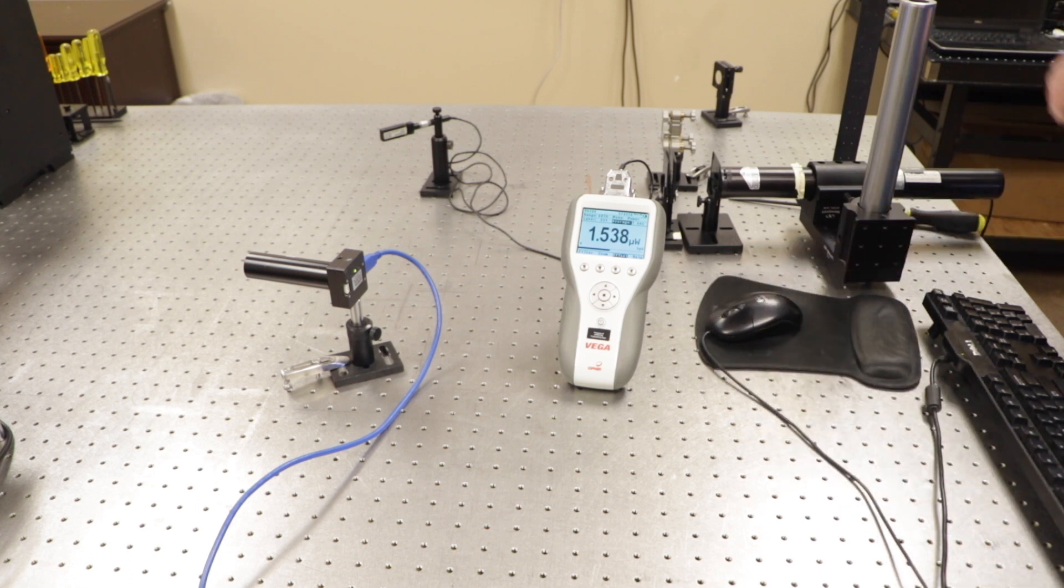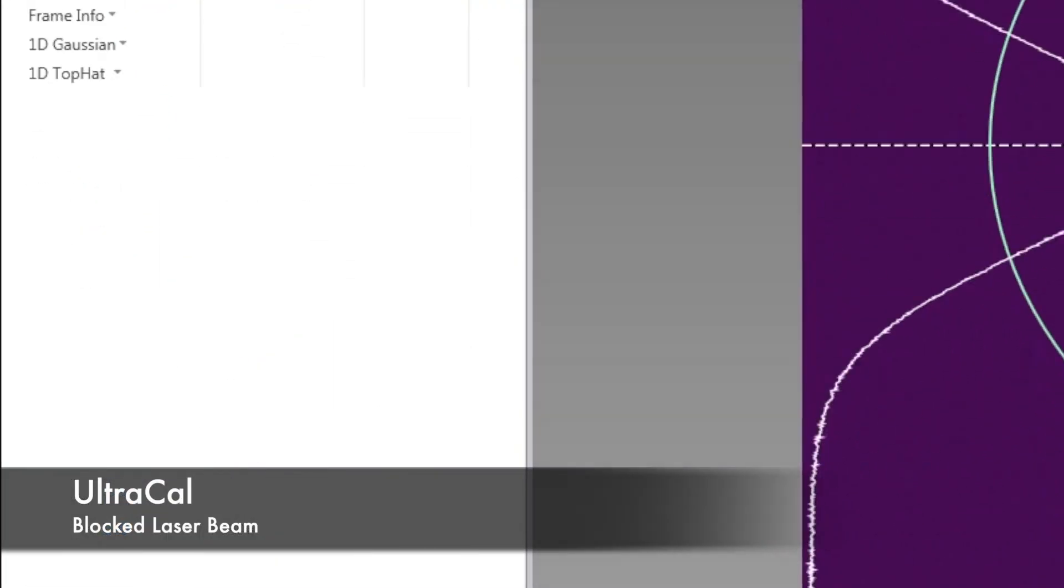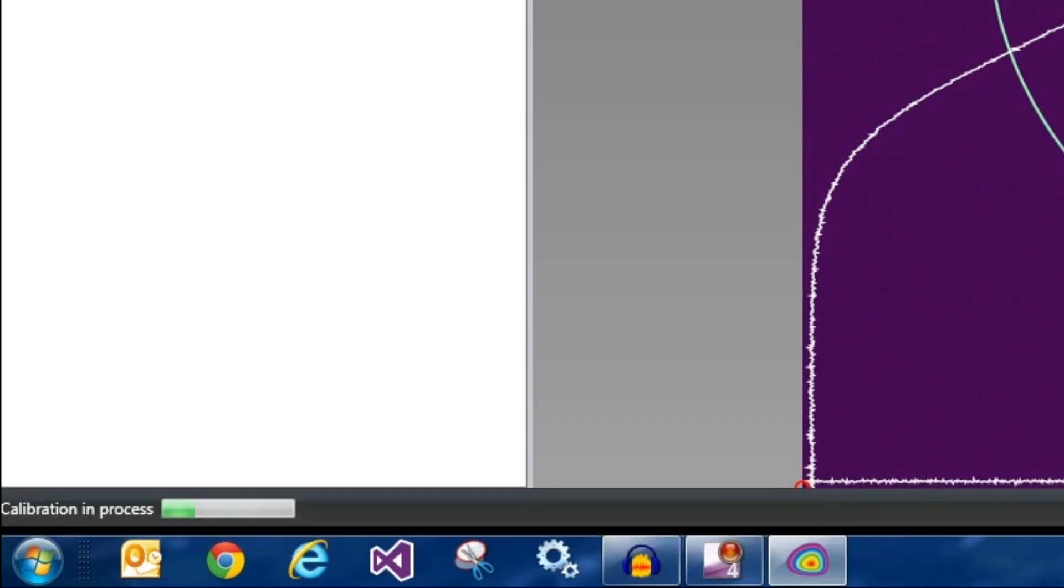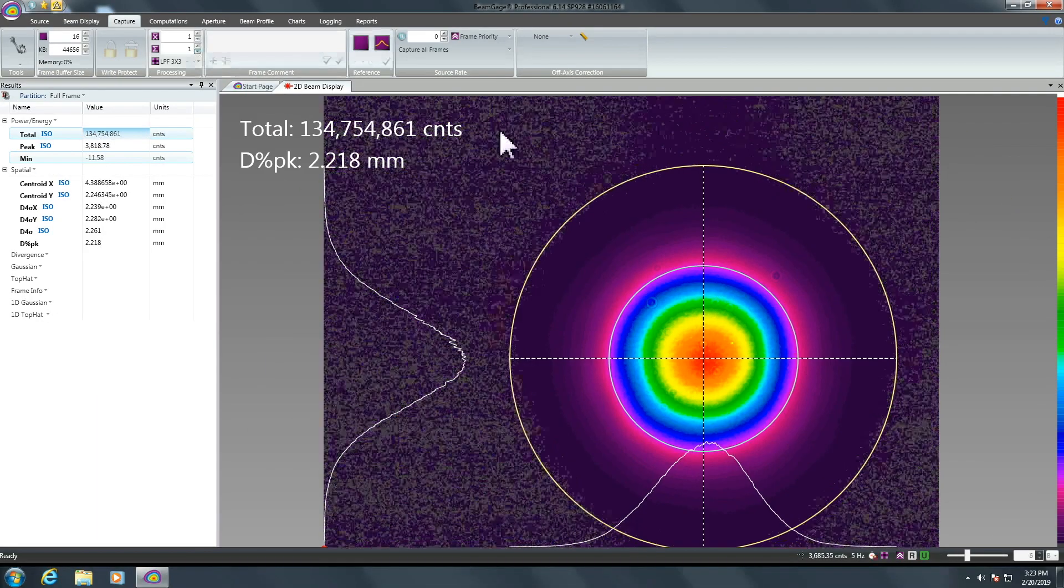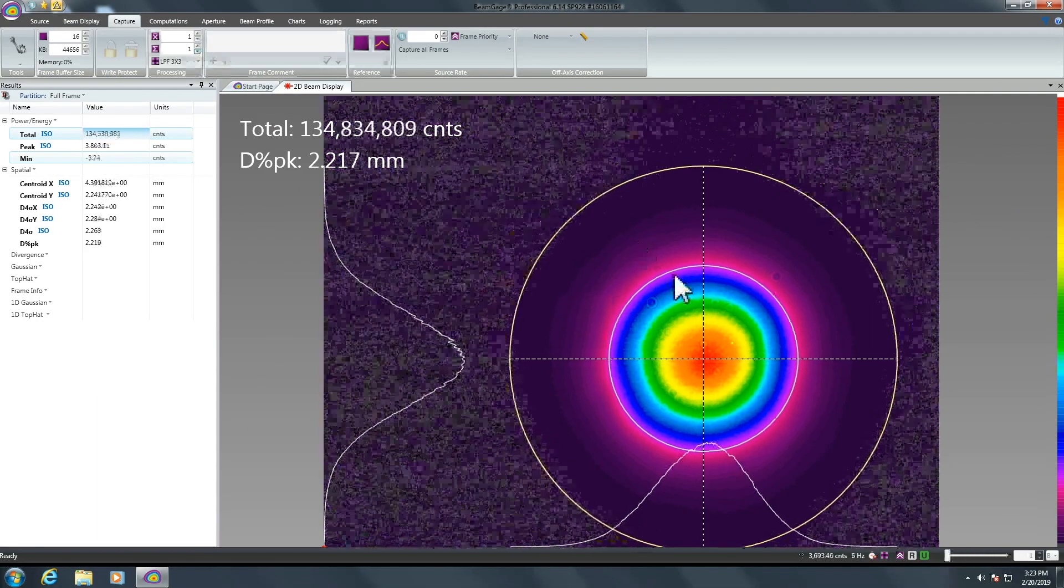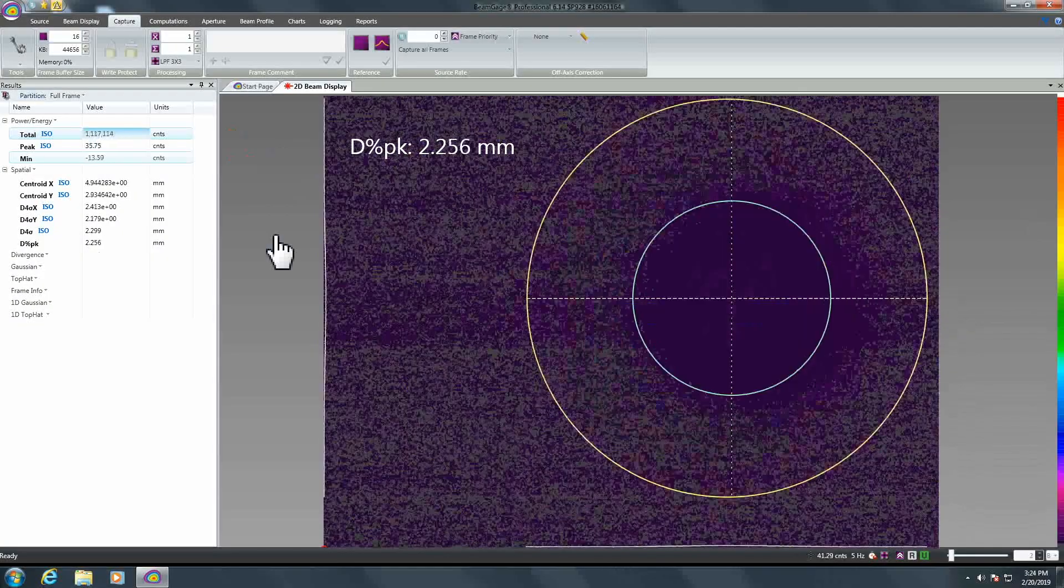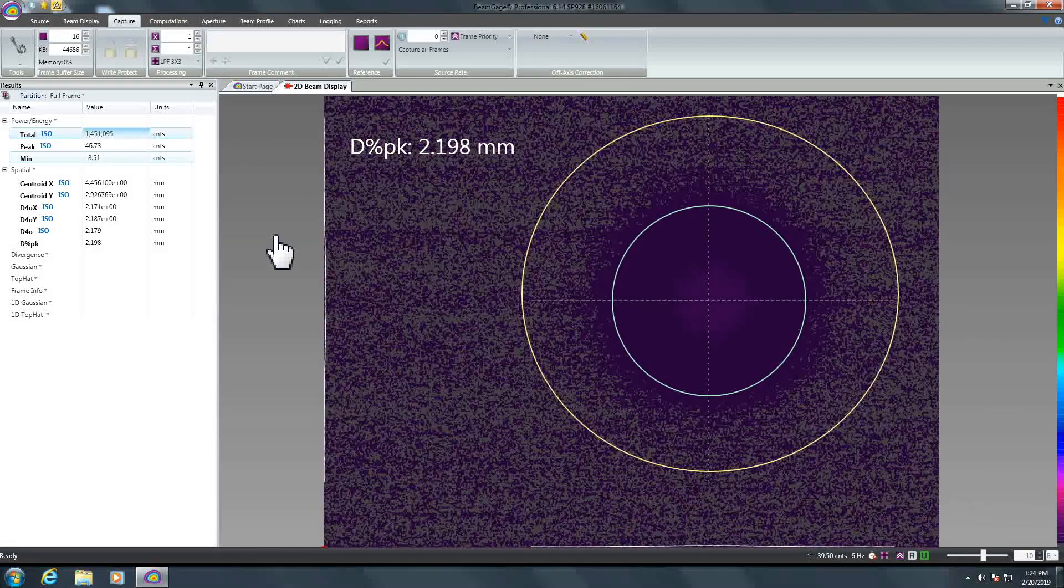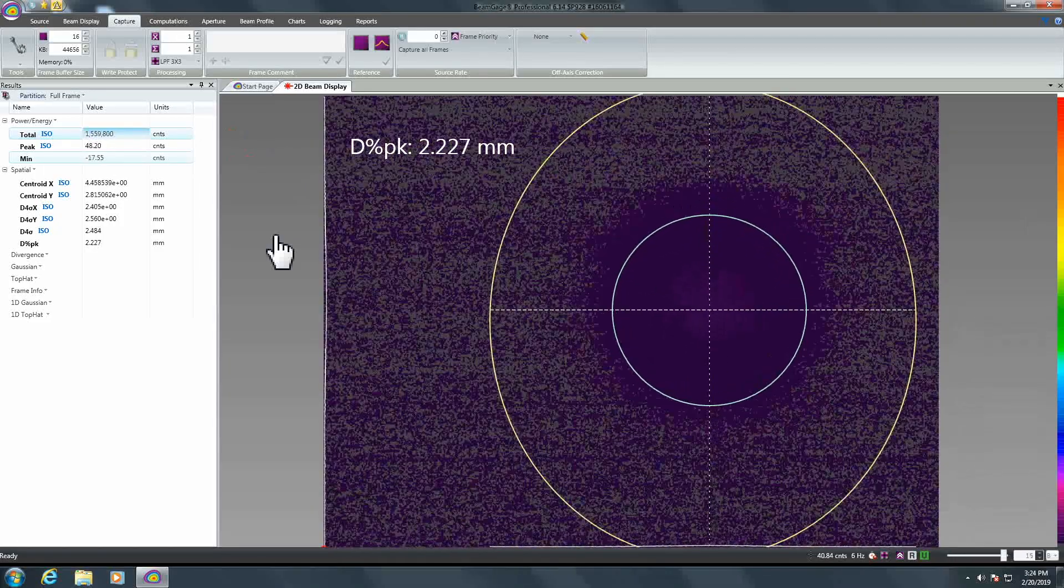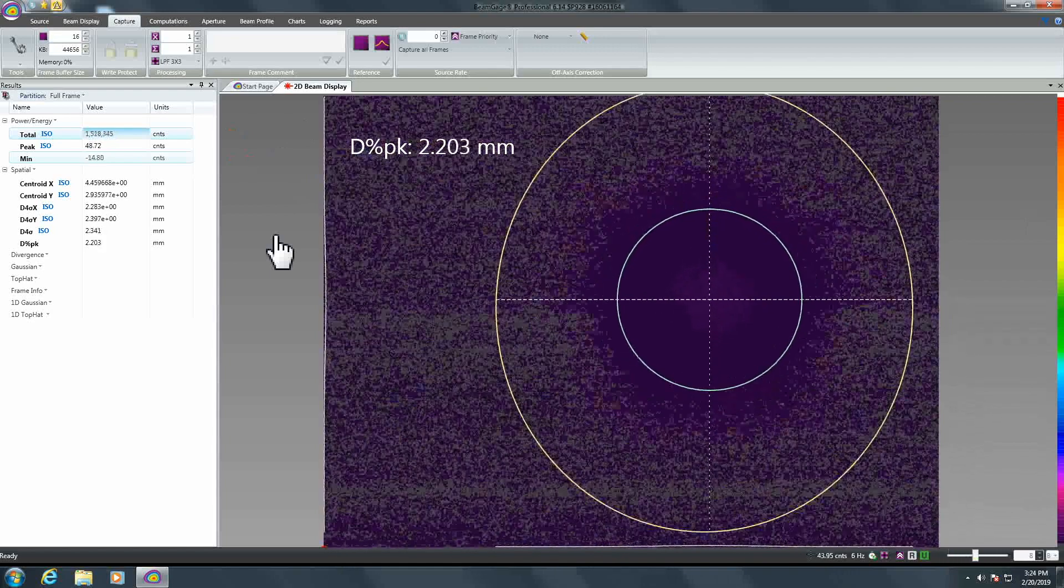We will now perform UltraCal on the camera with the beam blocked. When we remove the block, Beam Gauge measures the beam width at 2.2 millimeters. Moving the ND filters in front of the beam attenuates the laser energy by a factor of 100. The camera can barely detect the weak beam. Measuring the attenuated beam is difficult, as any noise in the system will overwhelm the weak beam.